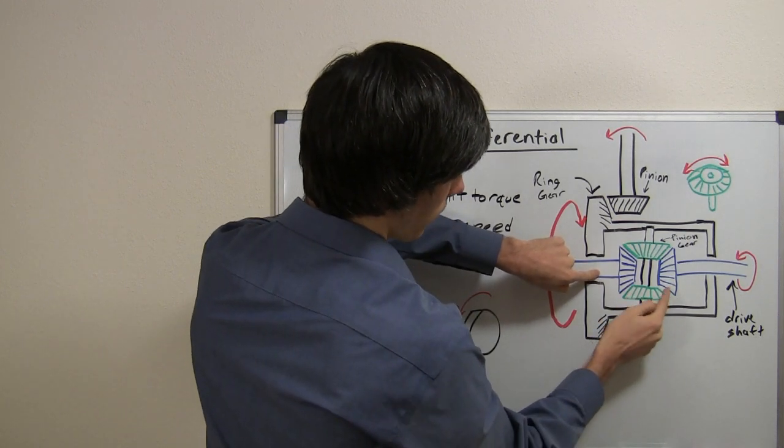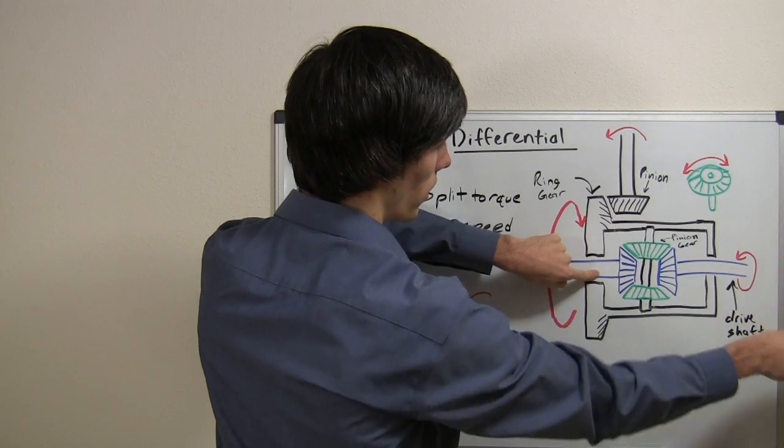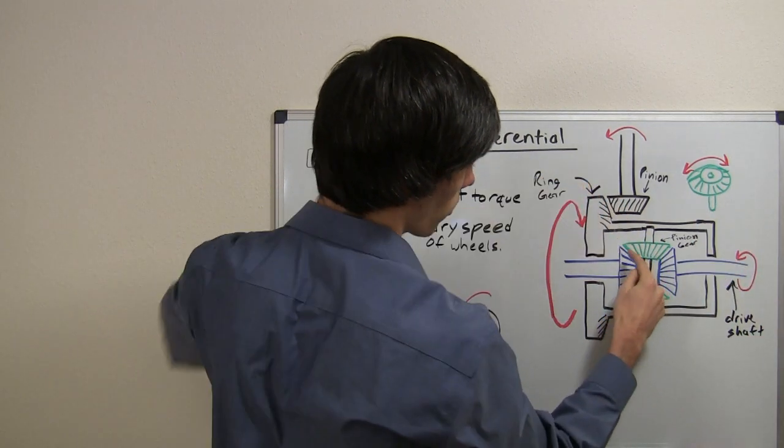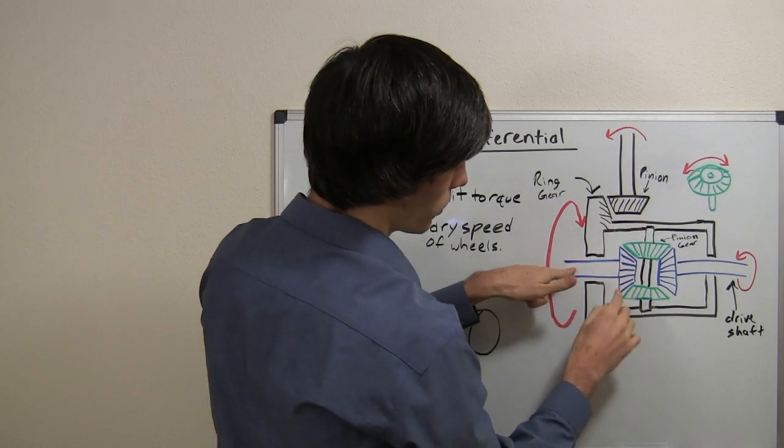So while that's happening, this gear here is going to be rotating. So this tire will start to spin as both of these green pinion gears rotate around this fixed blue driveshaft gear.